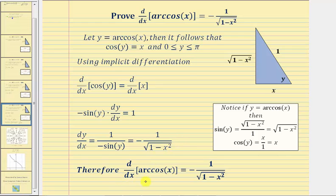And we have our proof. Notice how the derivative function value will always be negative where it's defined. It would not be defined at x equals one or negative one because we'd have division by zero. But because the derivative function value is always going to be negative where it's defined, we know the slopes of the tangent lines to y equals arc cosine x will be negative where the derivative is defined.